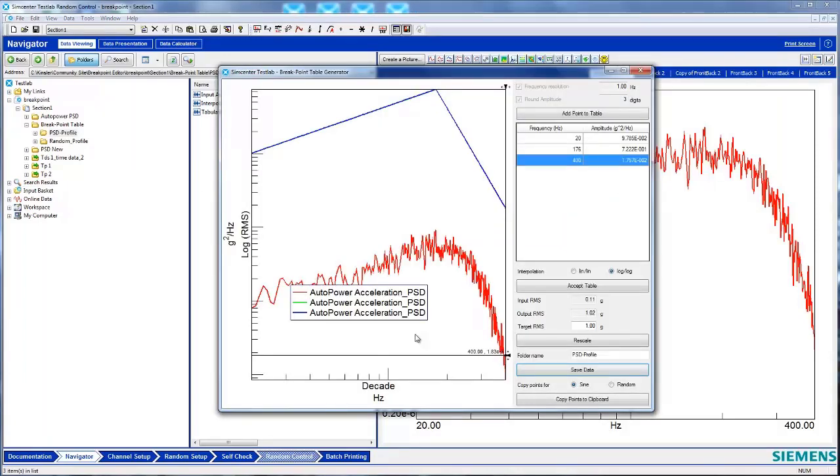Alternately, it's possible to copy the data to a clipboard. In this case, I created a random PSD profile, so I'll click the Random Radio button and then Copy to Clipboard.